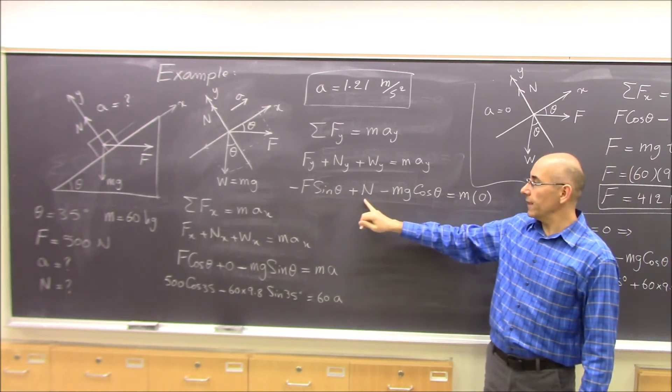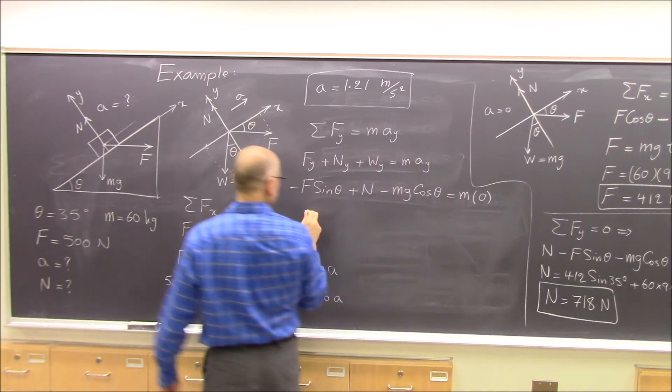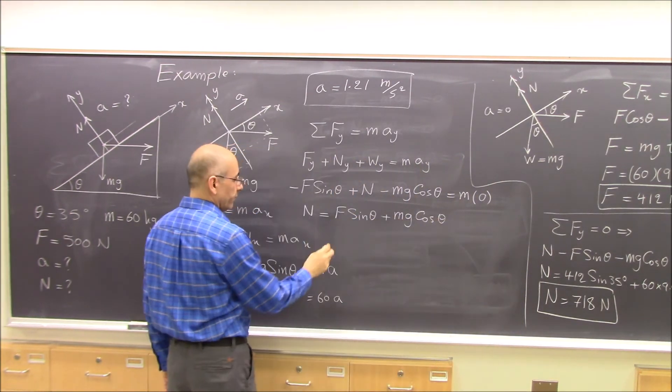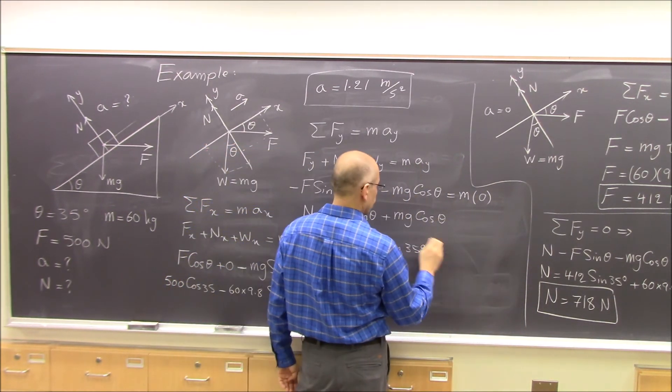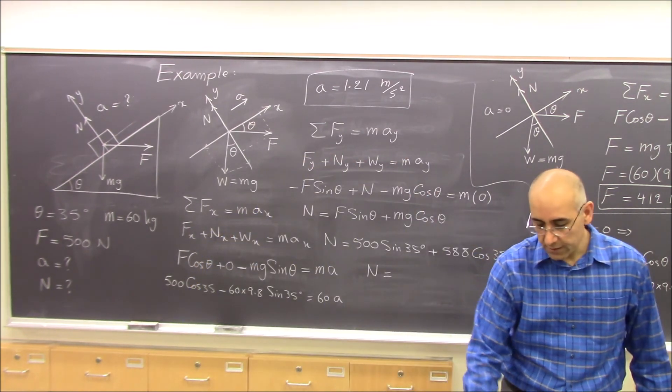Now I want to solve for N. Can I solve for N? Yeah, I have everything else. So N, if you put the numbers in, N will be 768 Newtons.